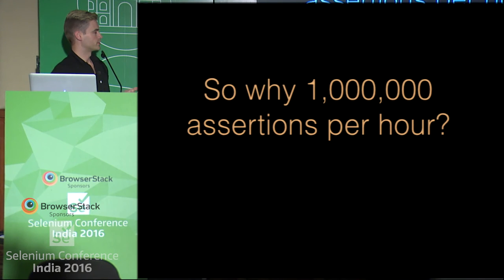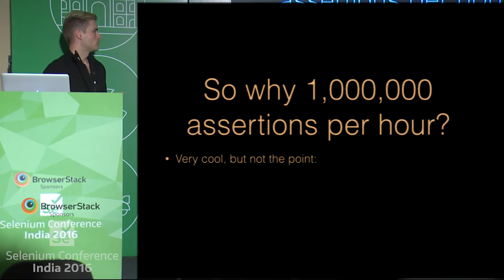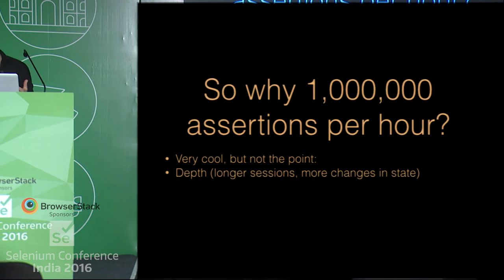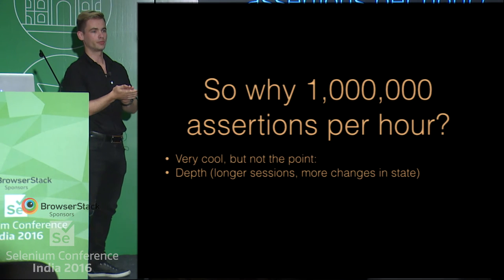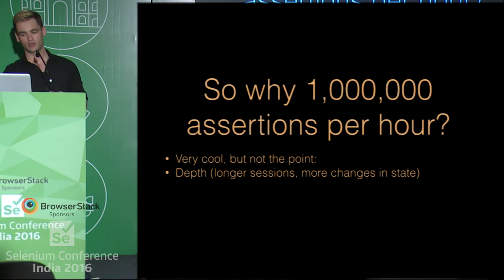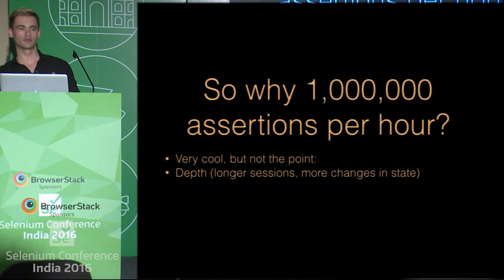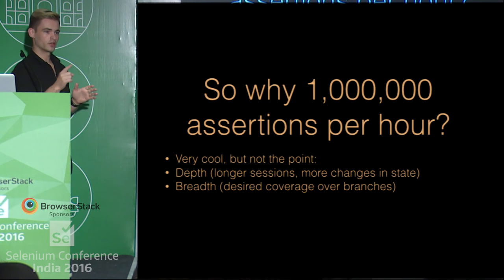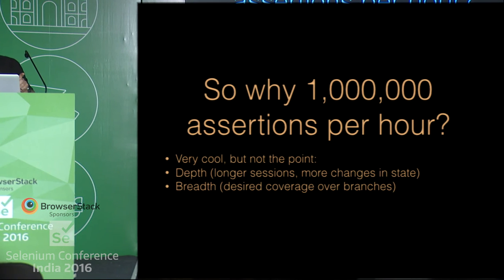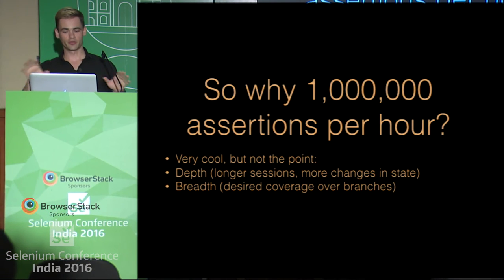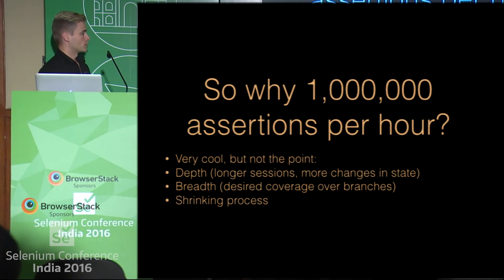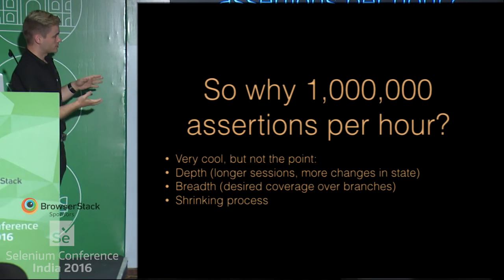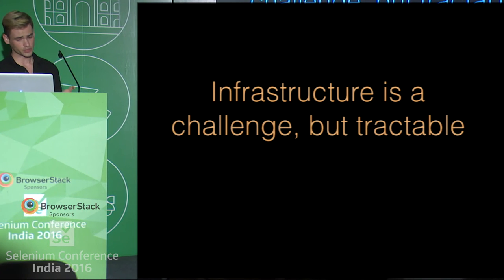The question is: why do we care about a million assertions per hour? It's pretty cool, first of all. But really, if you think about how deep you want to go in these tests — you want the computer to be able to test very, very deep in each one of those paths. The deeper you go, the longer the session you're representing. You also want to traverse over the breadth — not just checking log in, log out a million times, but also trying things like log in, submit a book, then do this. You want breadth of coverage as well. Once you find these bugs, the computer needs to shrink them. So there are a lot of assertions happening here. Infrastructure is a challenge, but tractable.